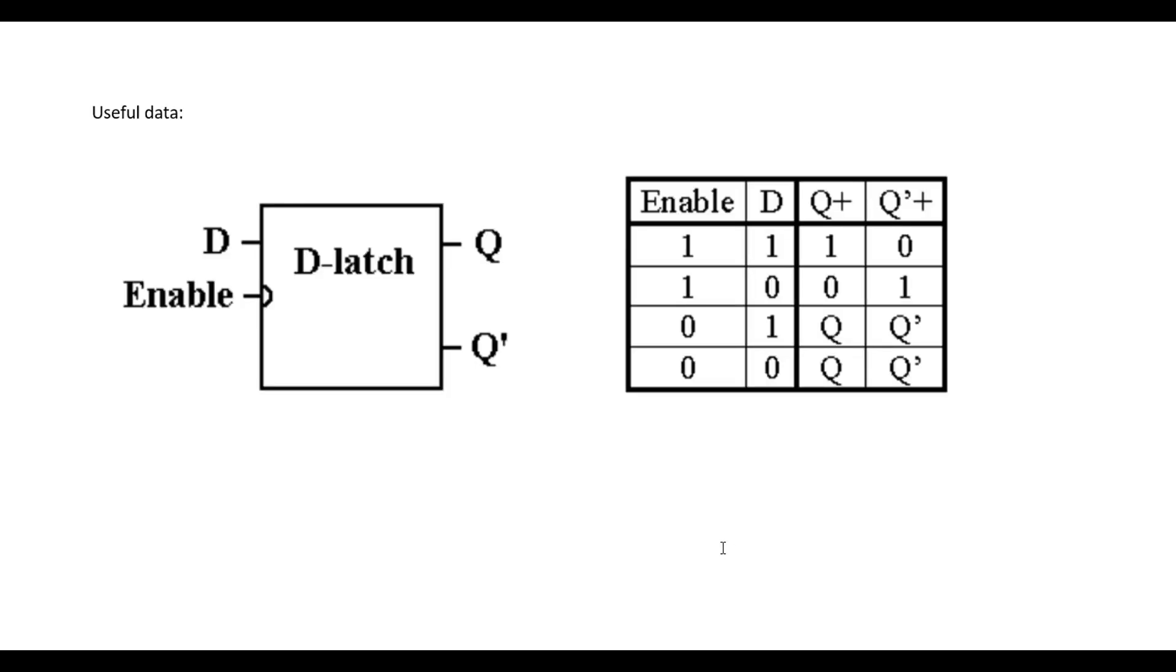So before we solve this problem, first we will understand what is the truth table of a D latch. So in a D latch when enable input is logic 1, simply the output Q equals to input D. So output latches input D. So if the input is 1, output will be 1; if the input is 0, the output will be 0. When enable input is 0, that means irrespective of the inputs, the output will be the previous value of the D latch. So output will be retained. So there is no change in the output of the D latch. So by using this information we can solve the given problem.